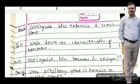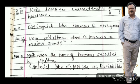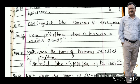Write down the components of the reflex arc. Write down the characteristics of a hormone. Next question: distinguish between hormone and enzyme. Next question: why is the pituitary gland known as the master gland? Next question: write down the names of hormones secreted by the pituitary.